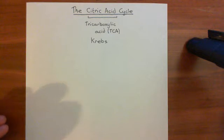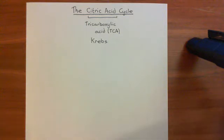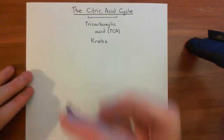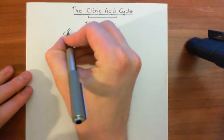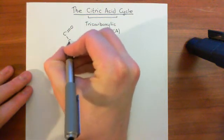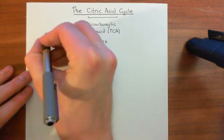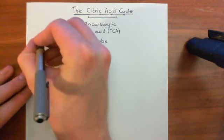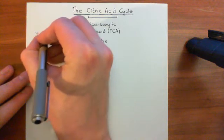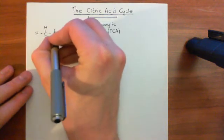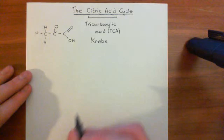The citric acid cycle is the process by which you break down what is left after glycolysis. You take pyruvate and basically break it down into carbon dioxide molecules. So let's start with the structure of pyruvate, which is our product from glycolysis. Pyruvate is a three-carbon molecule with a carboxylic acid group and, on the second carbon, a carbonyl group — a double bond to an oxygen.